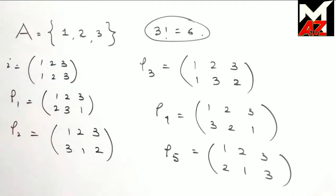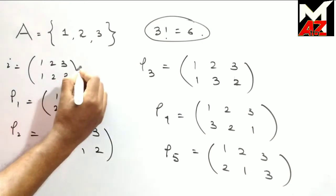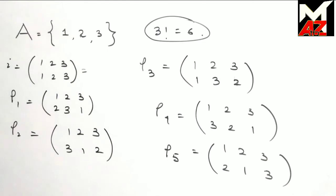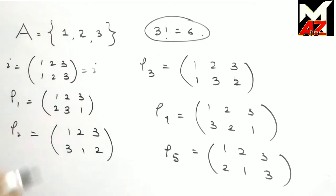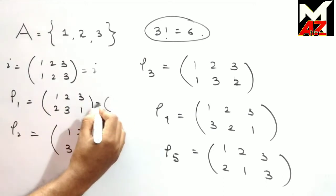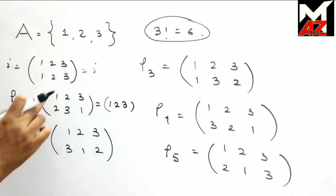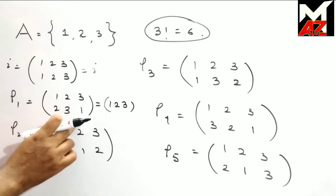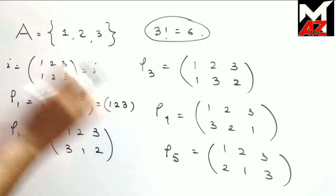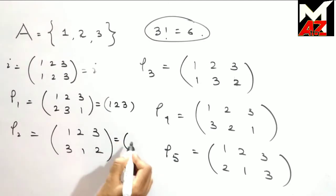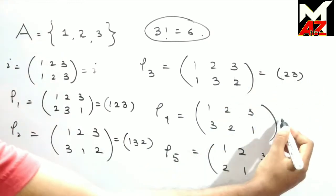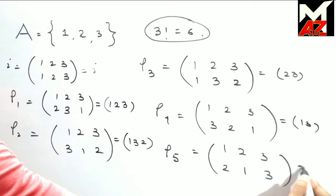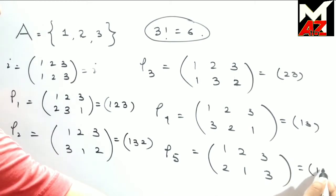These permutations can also be written in cycle notation. The identity I can be written as (1 2)(2 1). ρ1 is the cycle (1 2 3), ρ2 is (1 3 2), ρ3 is (2 3), ρ4 is (1 3), and ρ5 is (1 2).